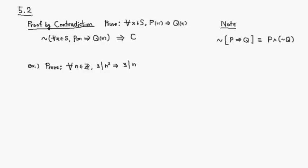Let's look at section 5.2. This section talks about proof by contradiction. So here's the logic behind it: what we want to do is to prove for all x in S, p of x implies q of x.